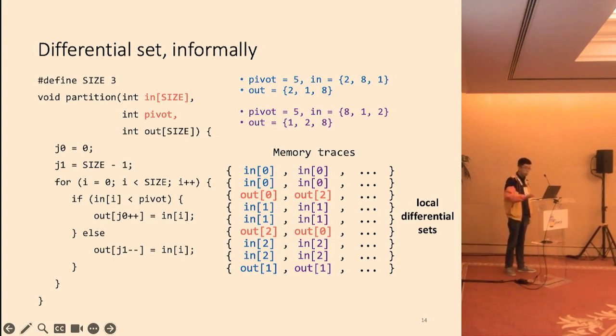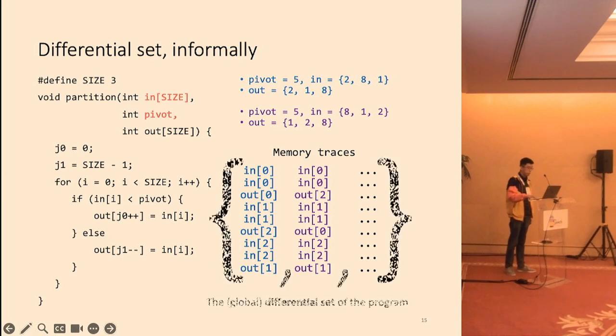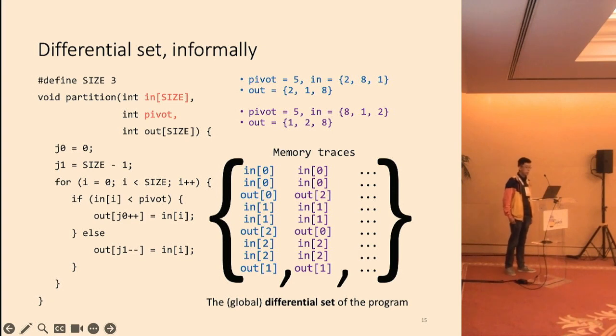Also, we use a simple example where the branches have the same length. We will show how to deal with more complex programs later. Now, still look at the trace, but do it vertically. We obtain a set of all traces. We call this the global differential set of the program, and often shortened as differential set. It summarizes the variation on the entire traces that a program can induce. The size of the differential set gives us an upper bound on the leakage. So we also solve the problem of leakage quantification.